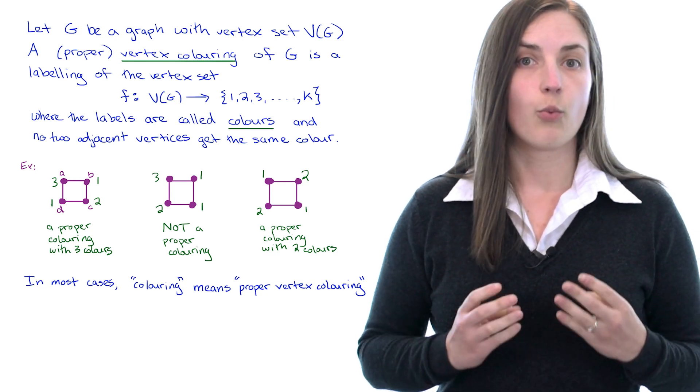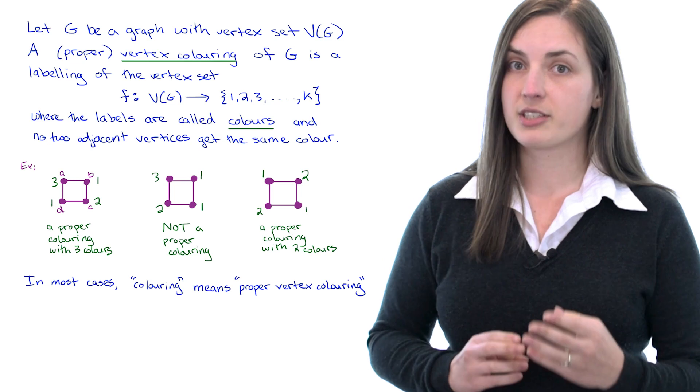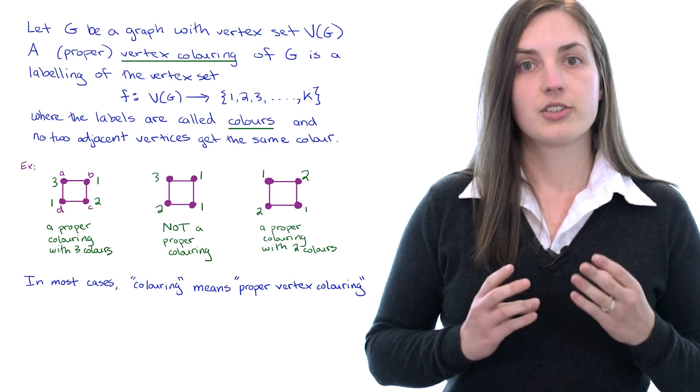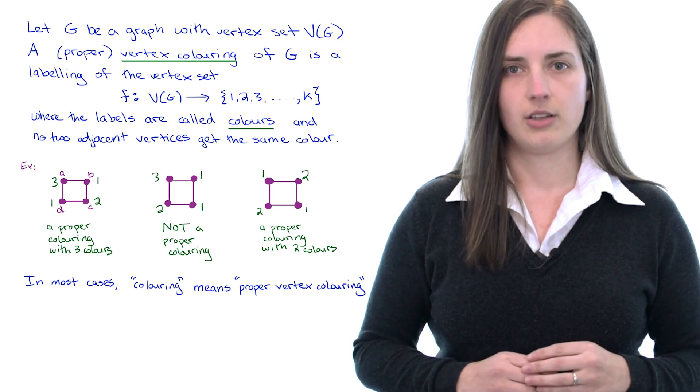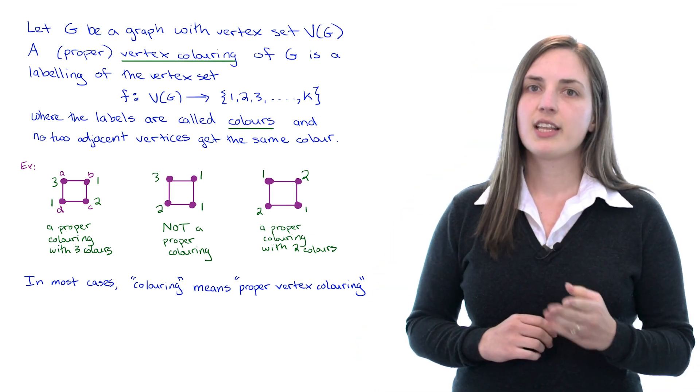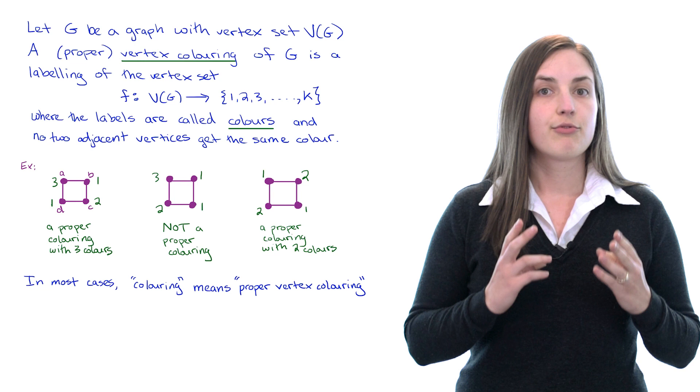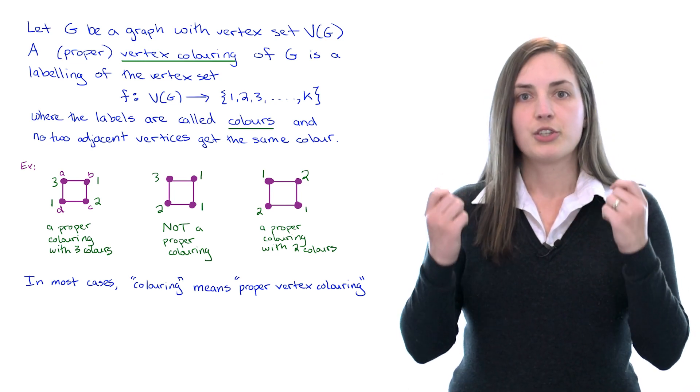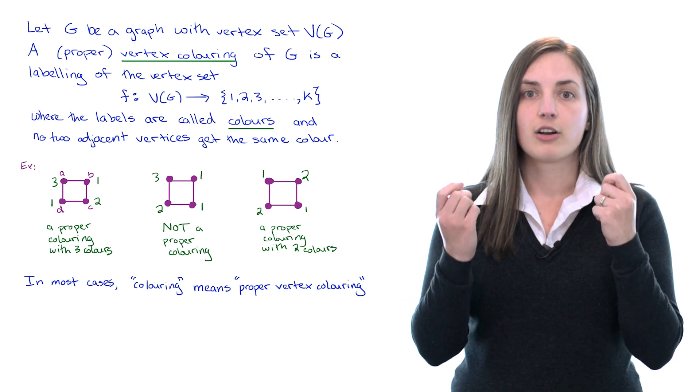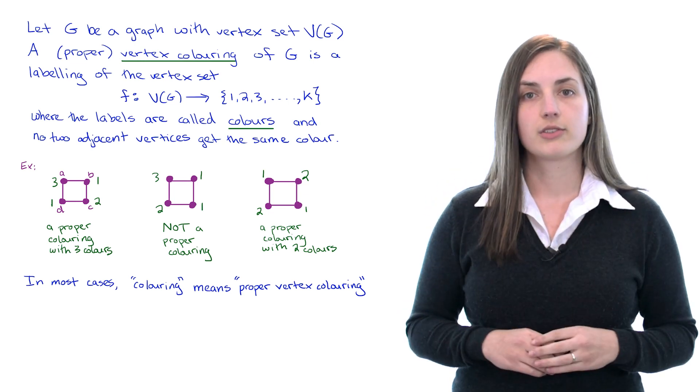Scheduling problems are one really good motivation for studying graph colorings. To see what I mean let's think about this four cycle in terms of a practical example. Imagine that in this example graph every vertex represents a course and we put an edge between two vertices if there are students in common between the courses.